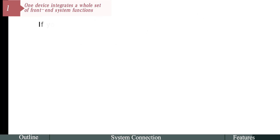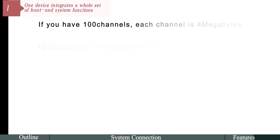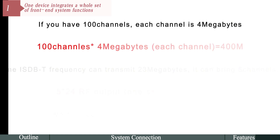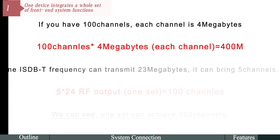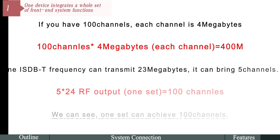If you have 100 channels and each channel is 4 megabytes, that's 100 channels × 4 MB = 400 Mbps total. One ISDB-T frequency can transmit 23 megabytes and carry 5 channels. 5 channels × 24 RF outputs equals 100 channels — so one device can achieve 100 channels.